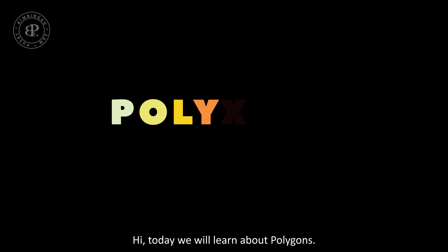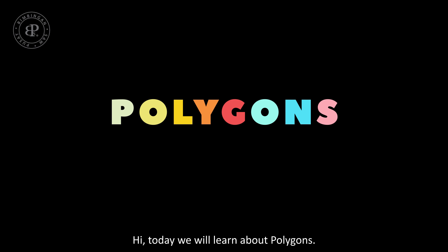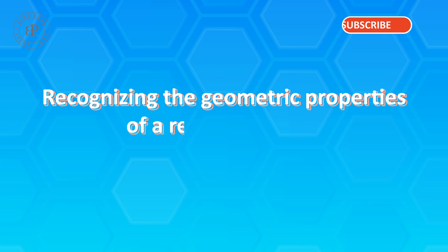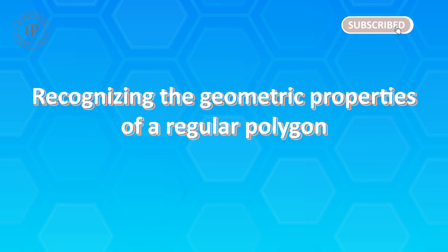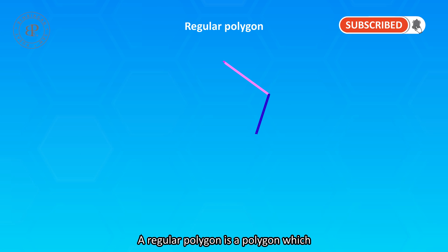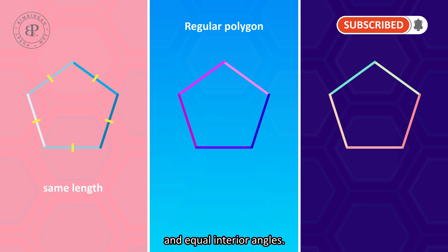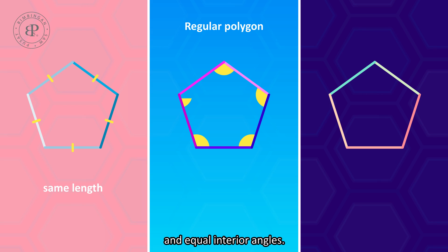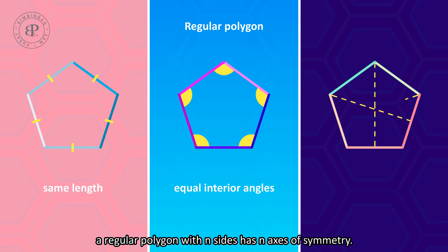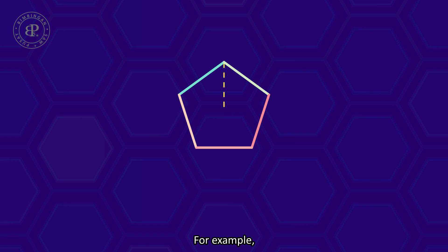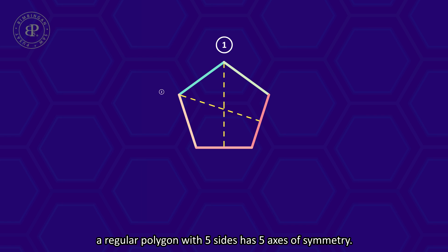Hi, today we will learn about polygons. A regular polygon is a polygon which has the same side length and equal interior angles. In fact, a regular polygon with n sides has n axes of symmetry. For example, a regular polygon with 5 sides has 5 axes of symmetry.